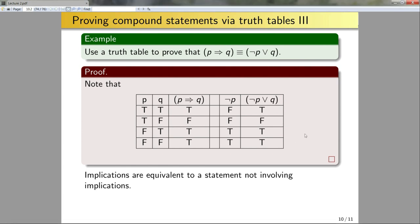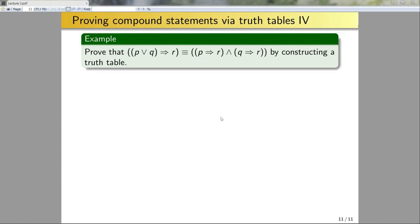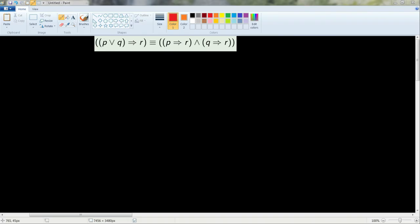Let's look at one more example. I will go through all the details for this case — if you don't want to see the details, you can skip it. I want to prove that (P∨Q)→R is logically equivalent to (P→R)∧(Q→R). Note there are now three statement variables: P, Q, and R. Therefore, when building the truth table, I need 2³ = 8 entries.